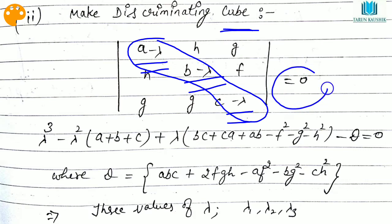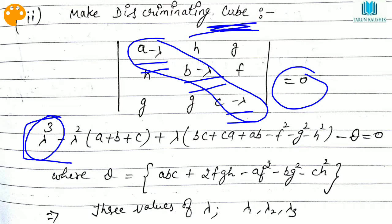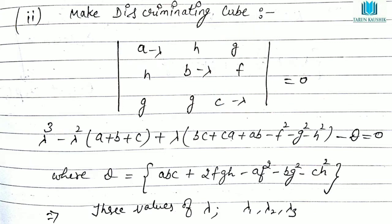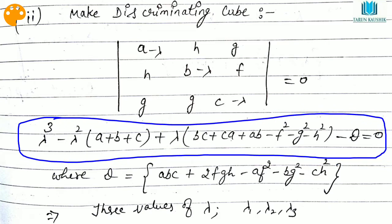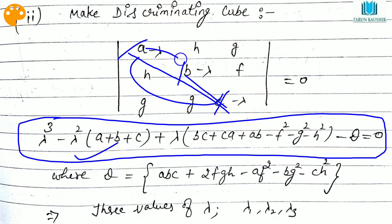After calculating the determinant and putting it equal to zero, we get a cubic equation in lambda. This gives three values of lambda: lambda one, lambda two, and lambda three. The formula to calculate them quickly is: lambda³ minus lambda² times (a+b+c) plus lambda times (bc + ca + ab minus f² minus g² minus h²), and so on.